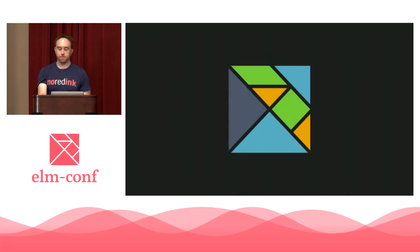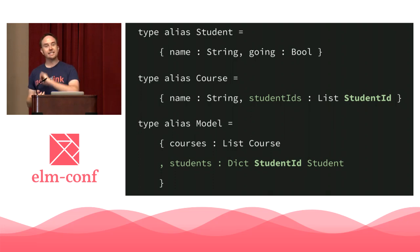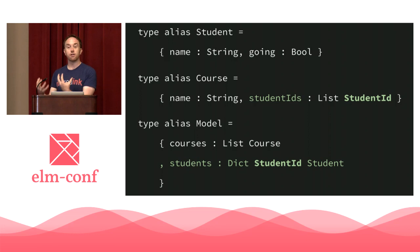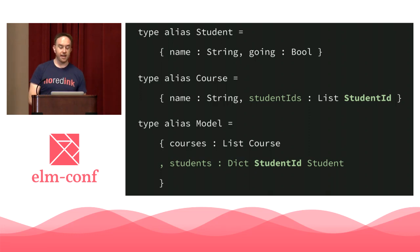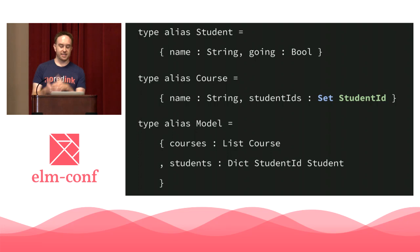Translating that idea into Elm: we change students in Course from List Student to Set StudentId. The model gets a top-level students dictionary keyed on StudentId. StudentId can be whatever type you want — integers, strings, custom types. The students dictionary is our single source of truth for all students across the entire model. Using a Set rather than a List ensures each student appears at most once per course.